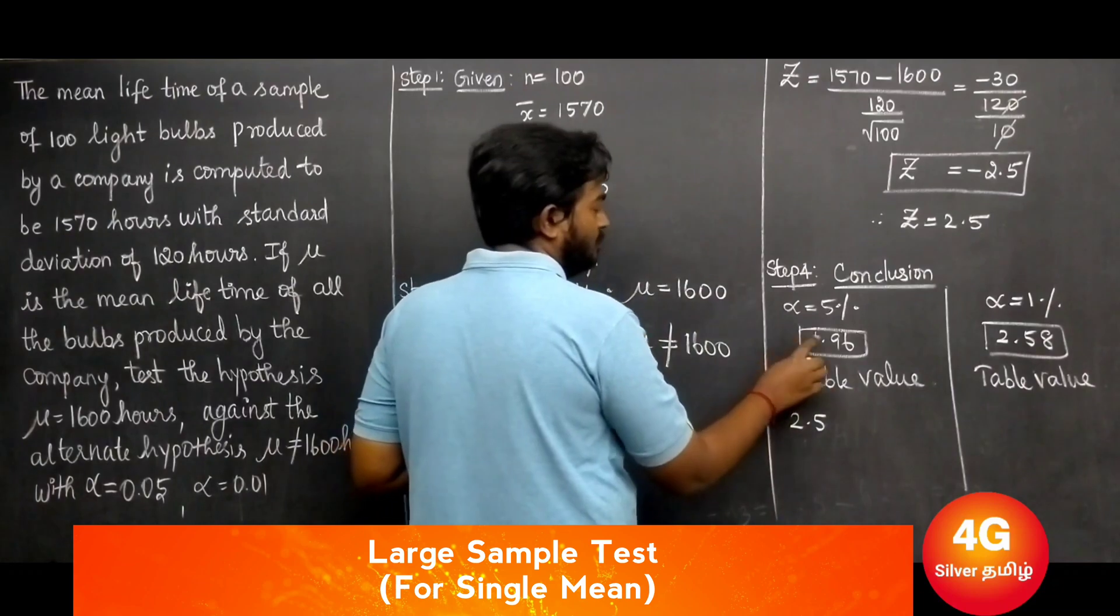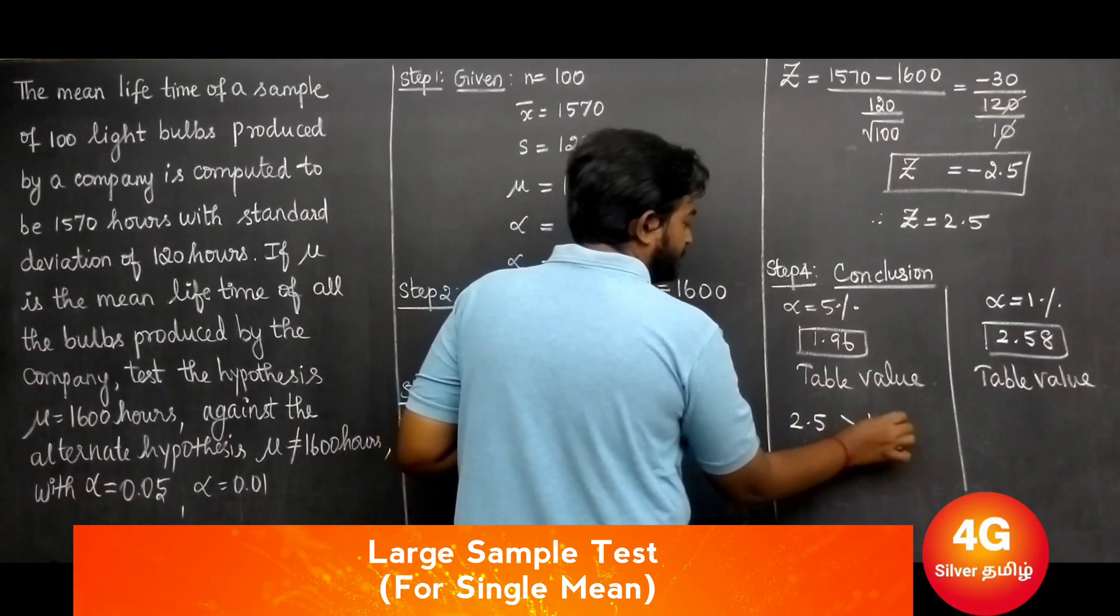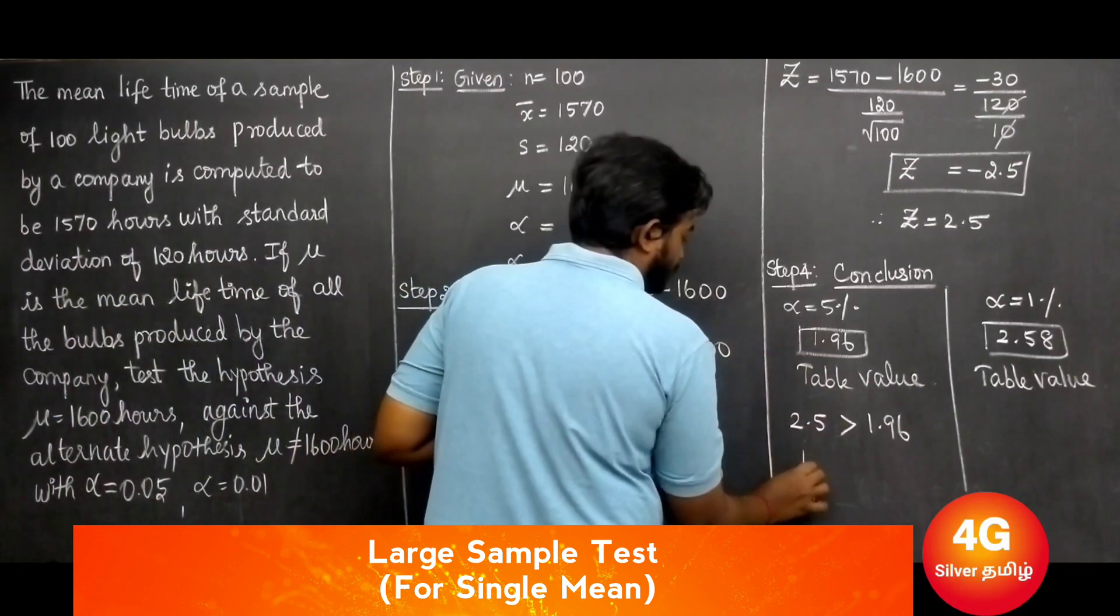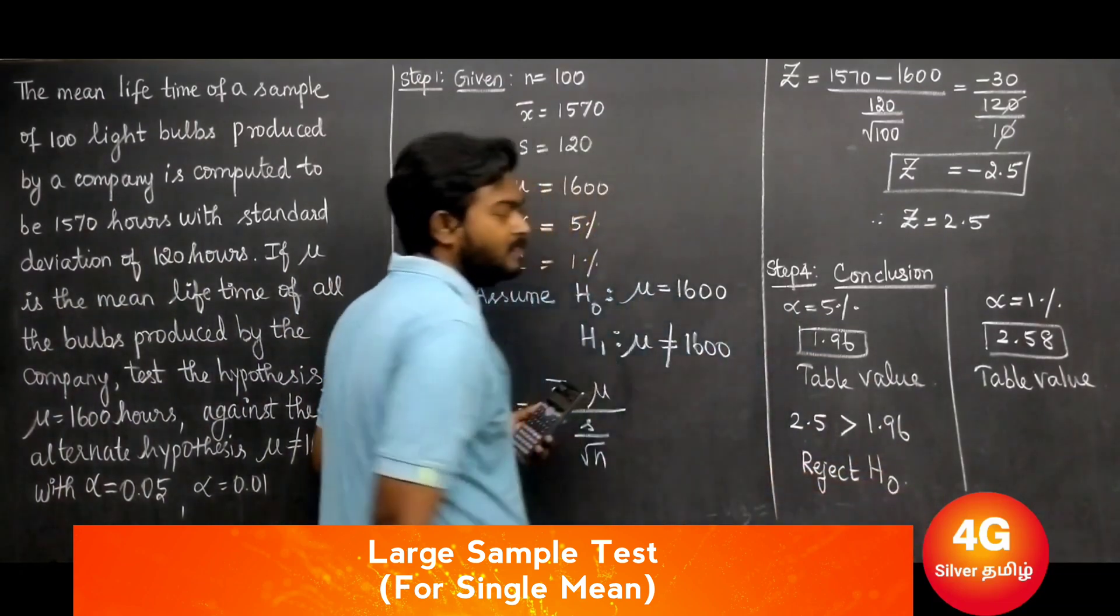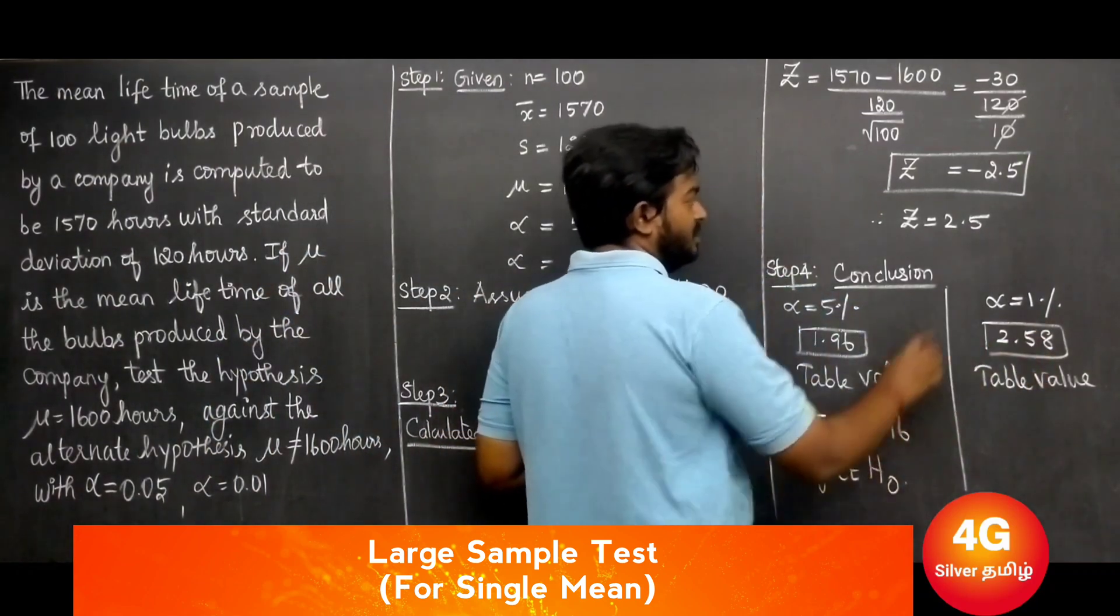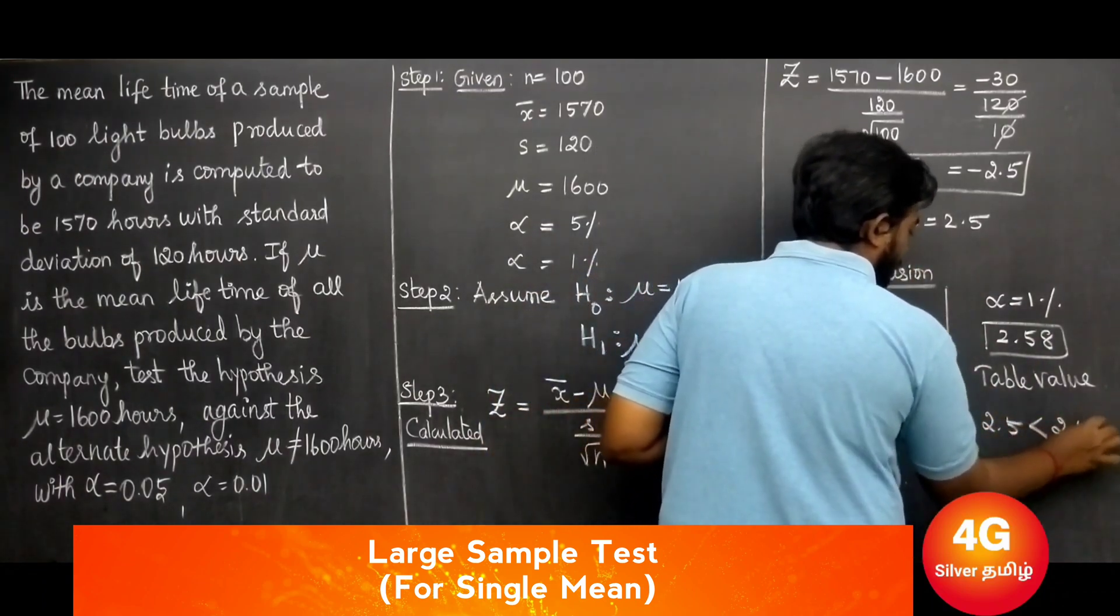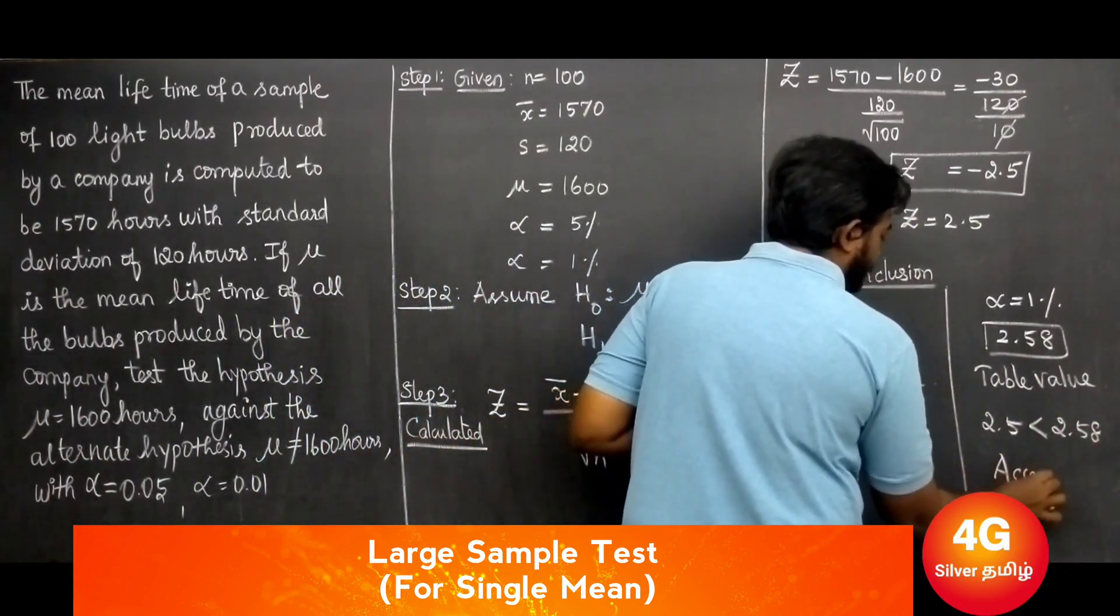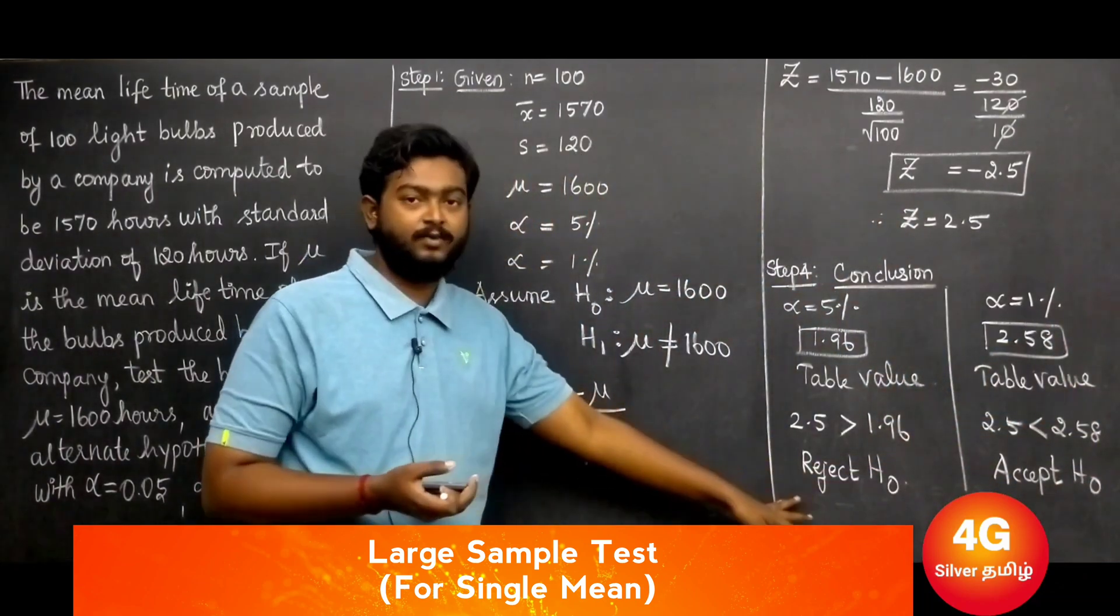Since the calculated z value 2.5 is greater than the table value 1.96, we reject the null hypothesis at 5 percent. At 1 percent, we accept the null hypothesis.